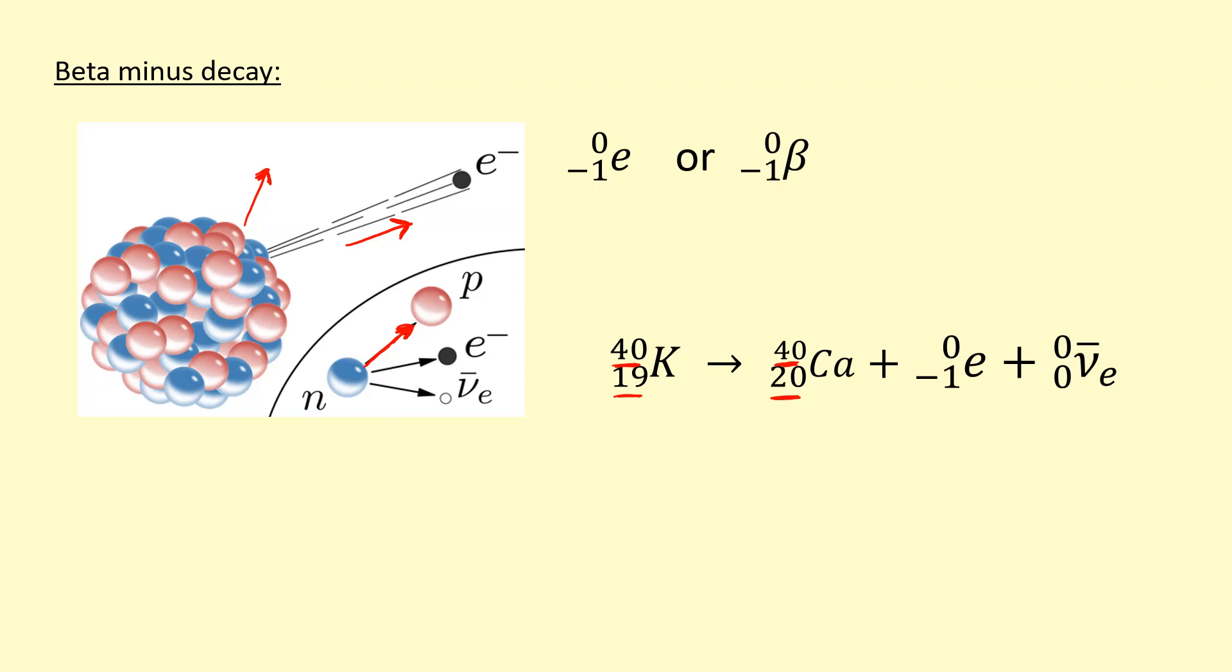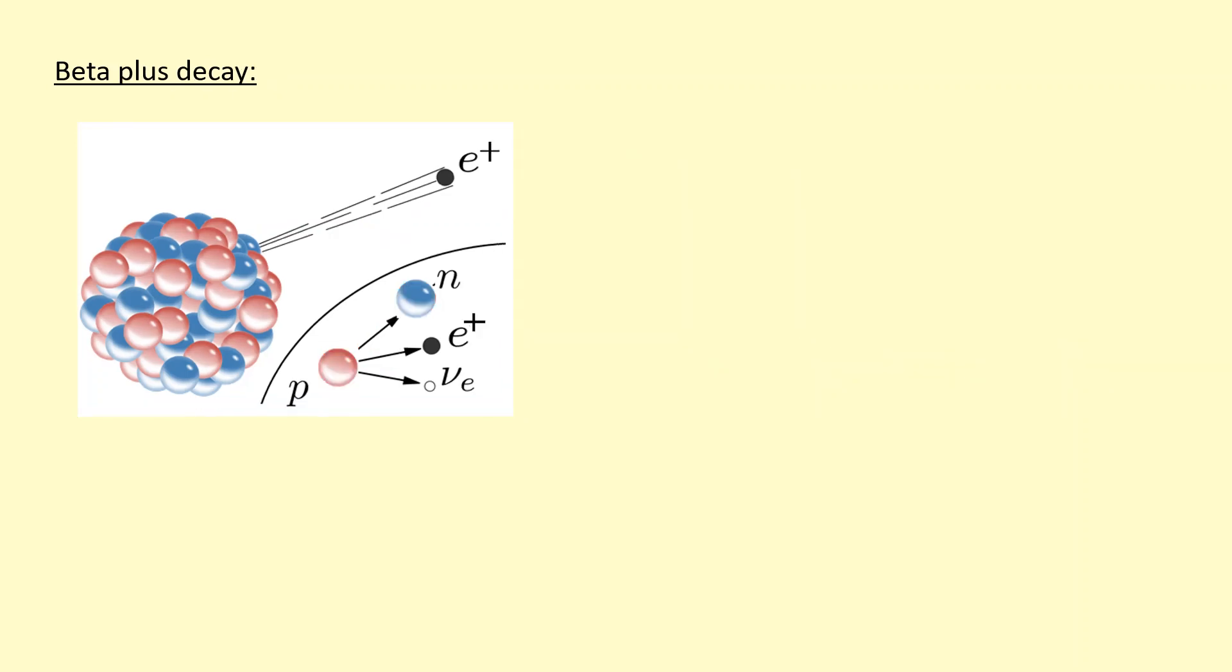Here we've got beta plus decay. This one has too many protons. The proton turns into a neutron, which stays inside the nucleus. A positron is emitted, and to conserve lepton number, an electron neutrino is also emitted.